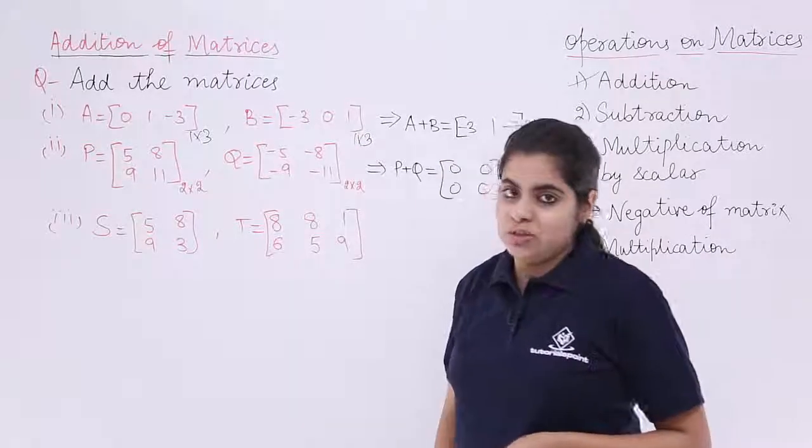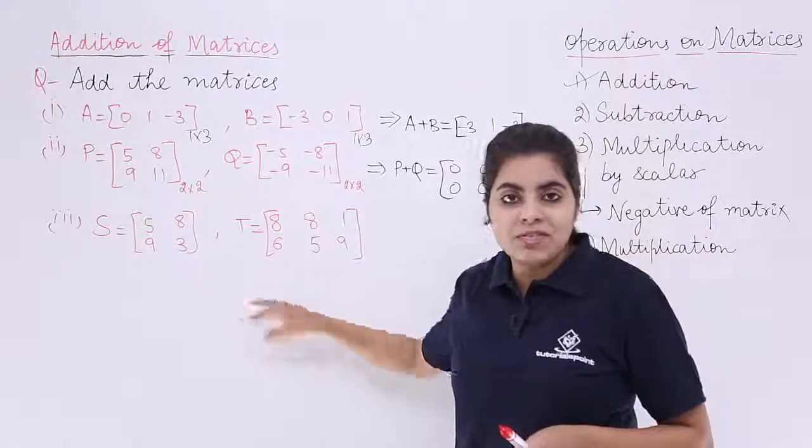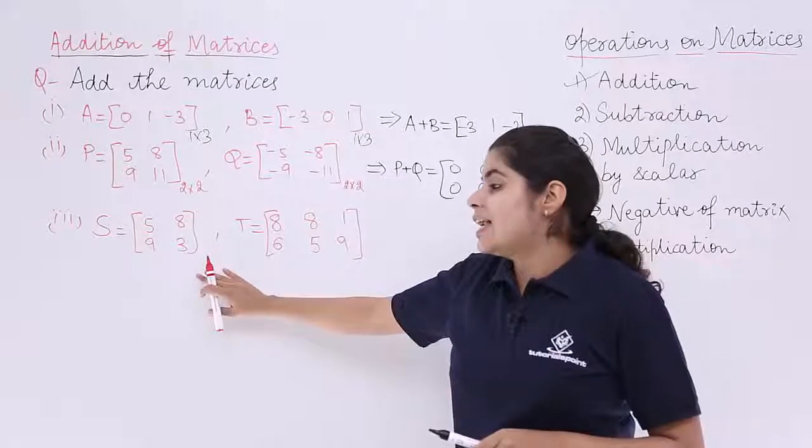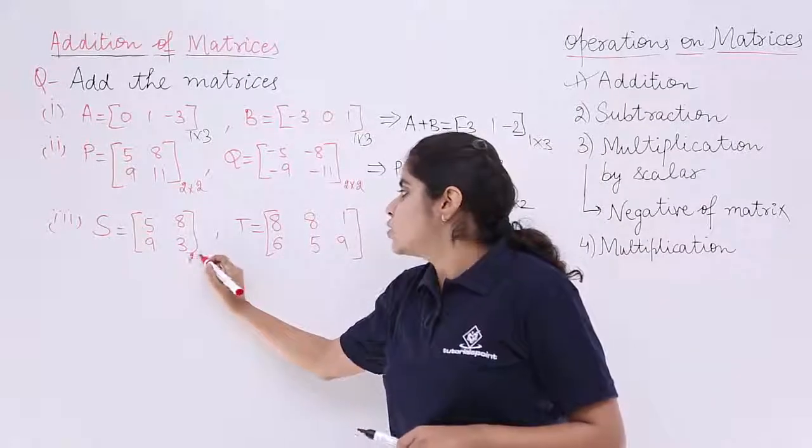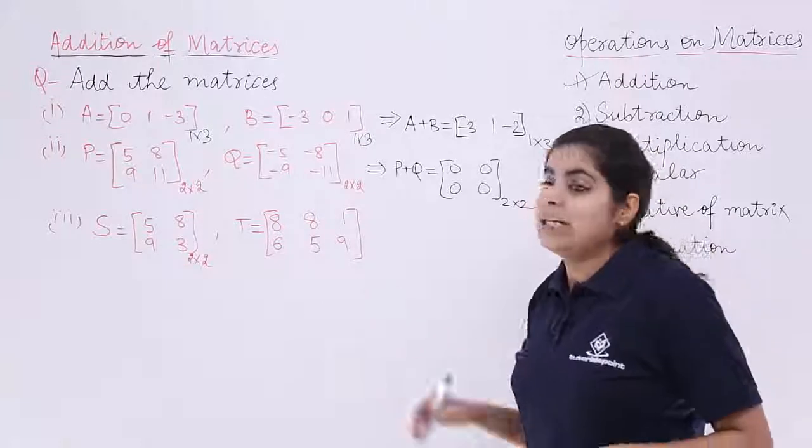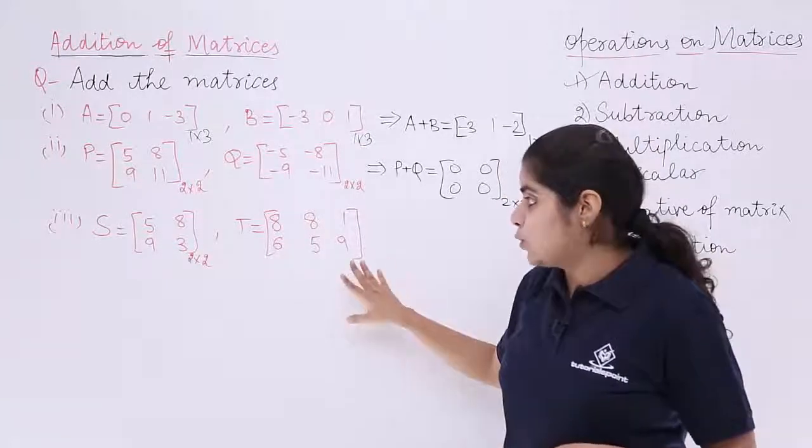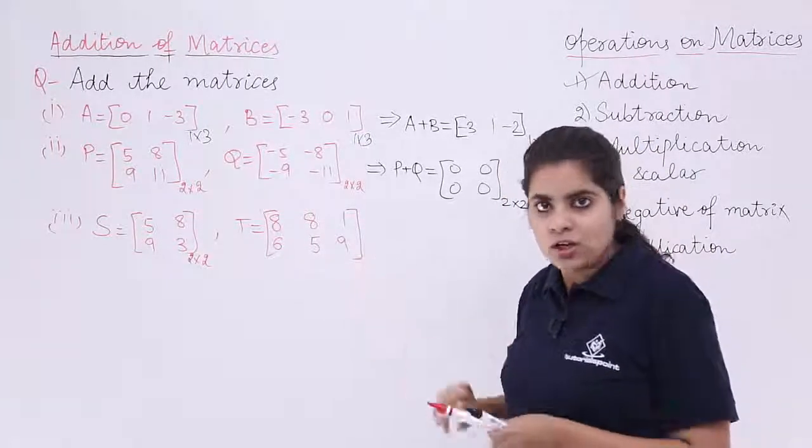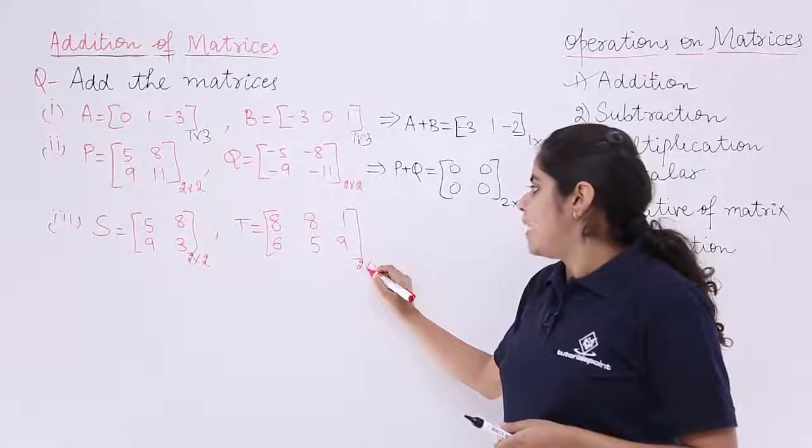Let's move on to the next question. The next question has 2 matrices, S and T. S has 2 rows, 2 columns. So, it is 2 by 2. What about the next one? T. T has 2 rows and how many columns? 3 columns. So, it is 2 by 3.